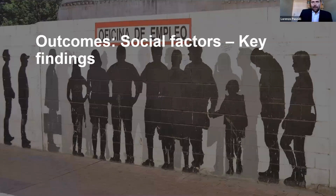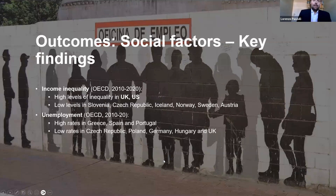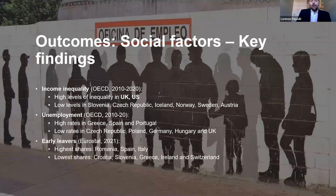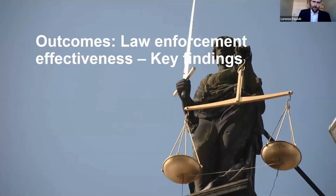Another outcome area concerns criminogenic factors such as income inequality, unemployment, and early school leavers. We found the highest inequality in the UK and the US, while very low levels were recorded in Slovenia, Czech Republic, Iceland, Norway, Sweden, and Austria. High unemployment was found in Greece, Spain, and Portugal, while low rates were seen in Czech Republic, Poland, Germany, Hungary, and the UK. Very high early school leaver rates appeared in Romania, Spain, and Italy. However, it is very difficult to determine a direct causal relationship between these factors and crime.